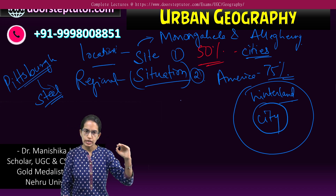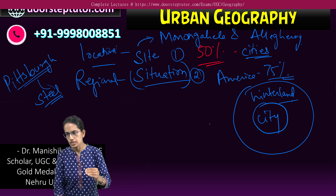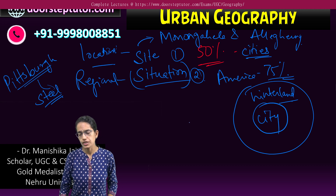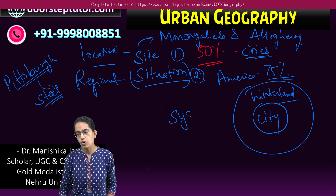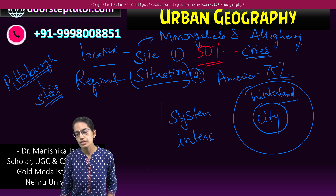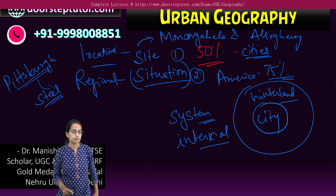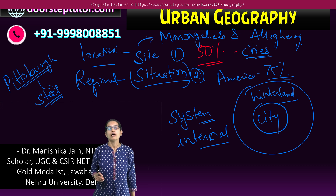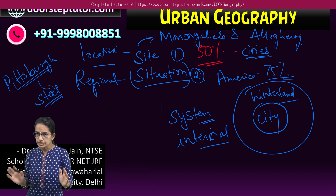Site focuses on locational aspects; situation focuses on regional aspects. When we focus on urban geography, it is a study of a system of cities, or it is a study of the internal city. So those are the two important things you focus on in urban geography: cities as a system, or the internal city.